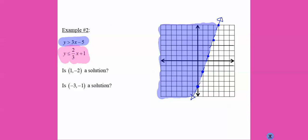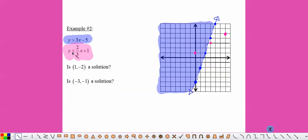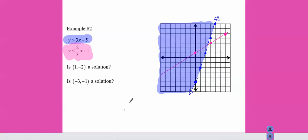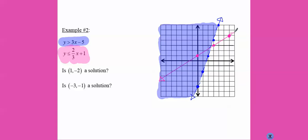For my second line, I'm going to start at positive one. Since it's got the or equal to line, I'm going to use a solid line to connect my dots. And since it's less than, I'm going to go below the line.